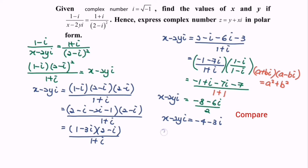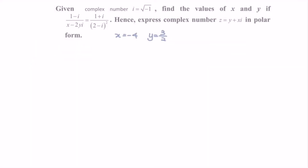So in here, x will be equals to negative 4. 2y will be equals to 3, so the value of y will be equals to 3 over 2. So now we already have the value of x which is negative 4, and the value of y which is 3 over 2.